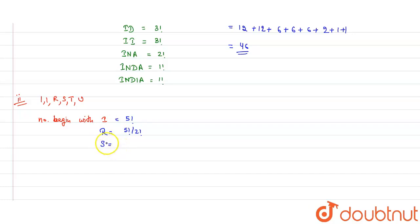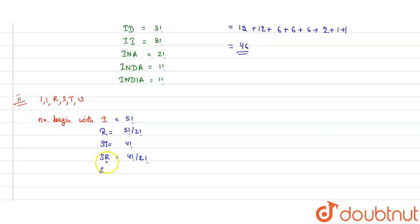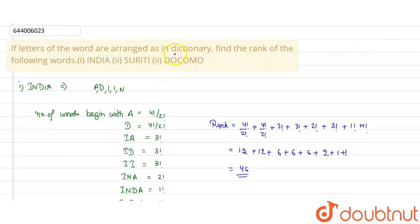We don't want R, so after R comes S. Words beginning with SI give 4 factorial. After S comes R; since I appears twice in the remaining letters, we get 4 factorial divided by 2 factorial. We don't want SR, so we move to ST. Words beginning with ST give 4 factorial divided by 2 factorial.